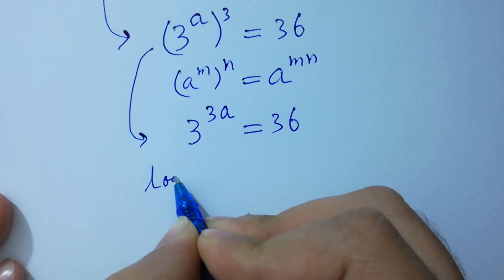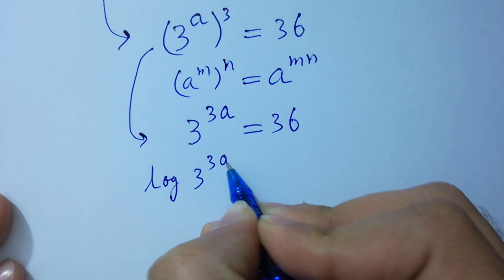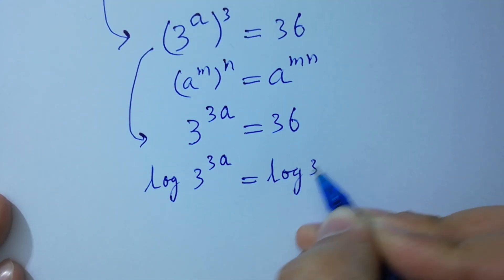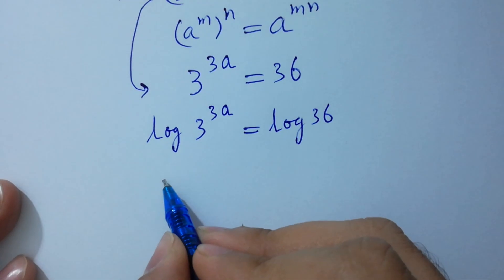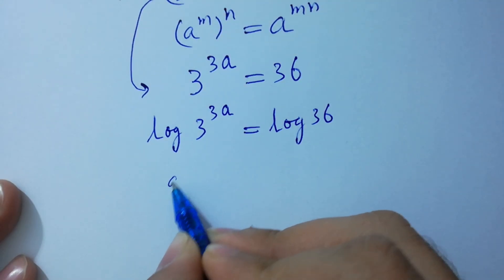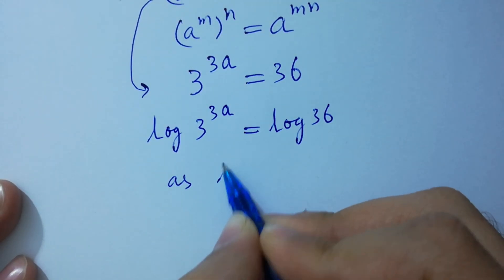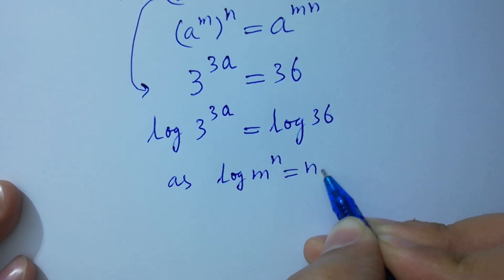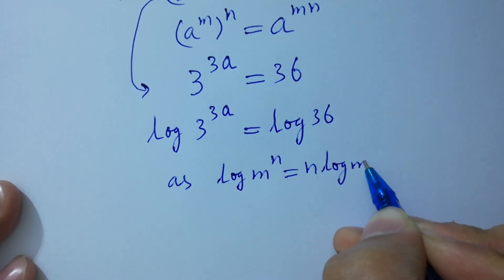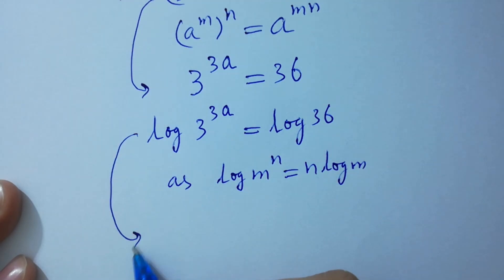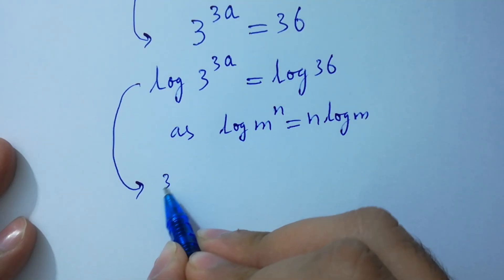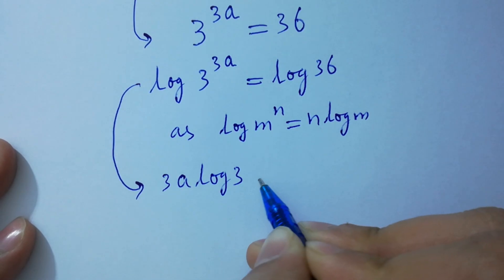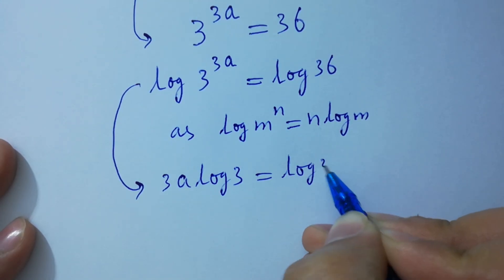Log of 3 to the power 3a equals log 36. As log m to the power n equals n log m, we get 3a times log 3 equals log 36.